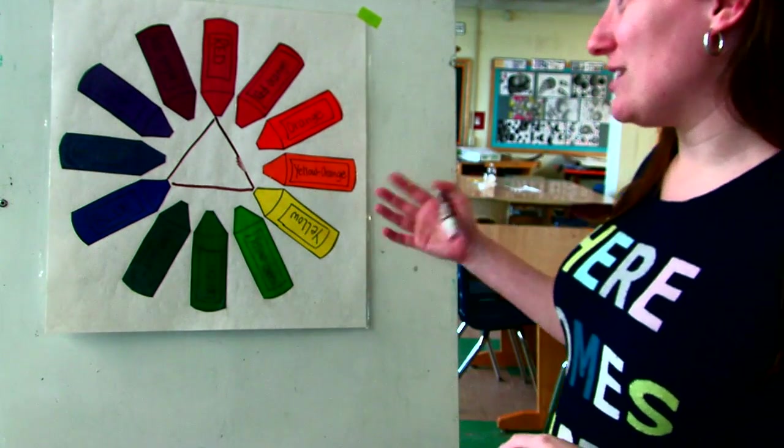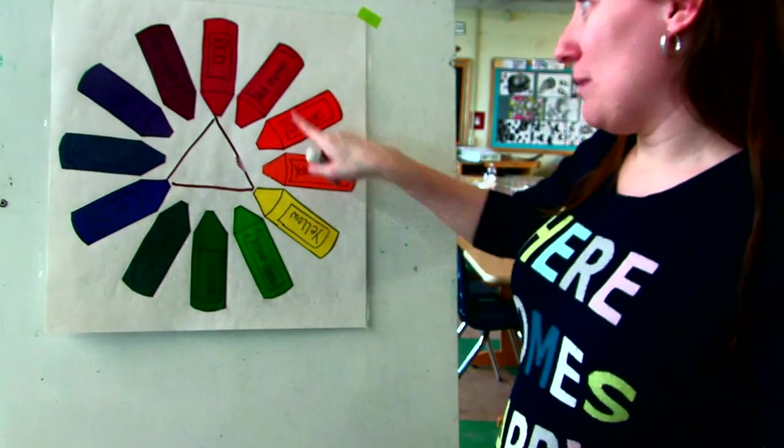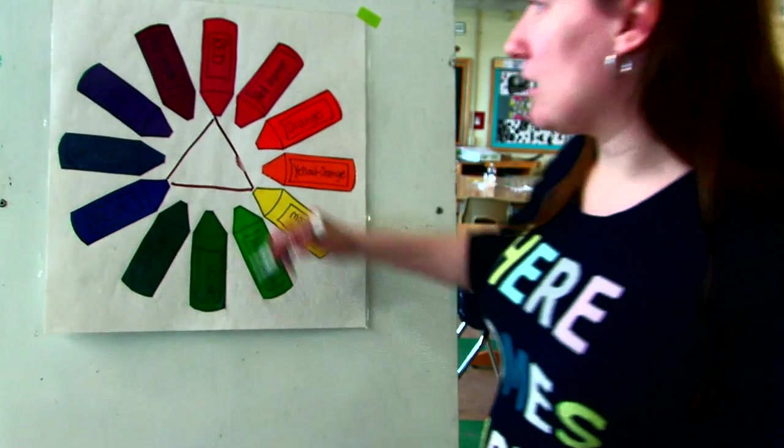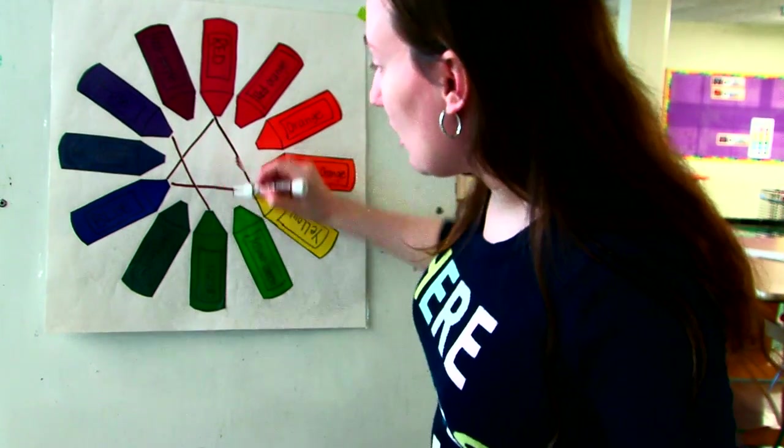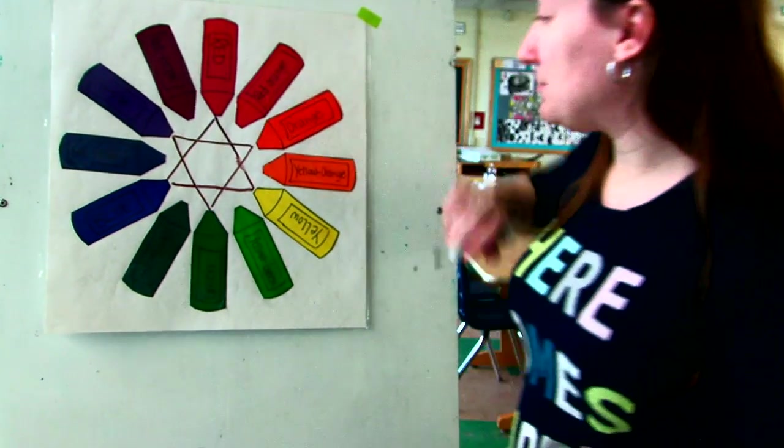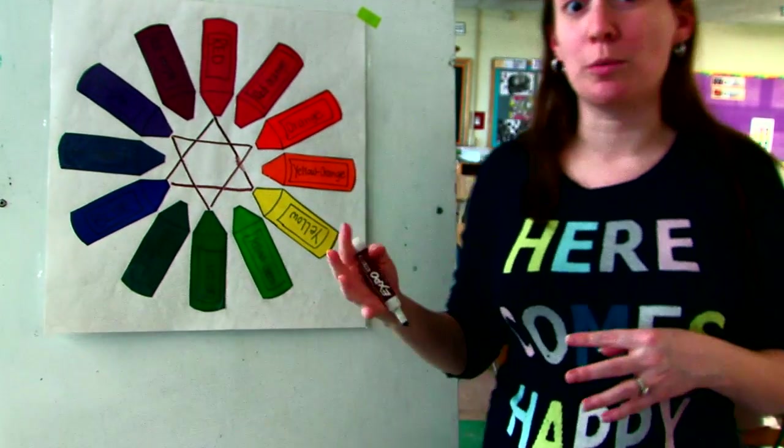So for instance, red and blue make purple, red and yellow make orange, and blue and yellow make green. So our secondary colors are there. It kind of forms a triangle in the center of our color wheel.